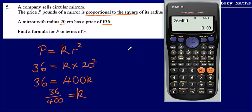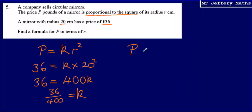So our answer to this, find a formula for P in terms of r. The price is going to be equal to 0.09 multiplied by the radius squared. So final answer, P equals 0.09 r squared.